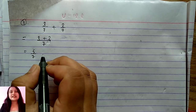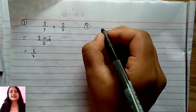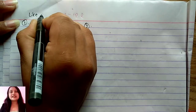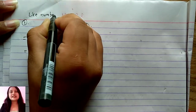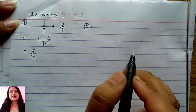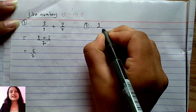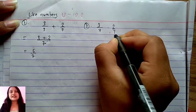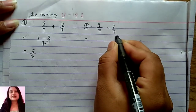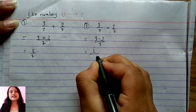Similarly, if subtraction is given, it works the same way when the denominators have like terms. If the like terms are there, we can directly take a common denominator and perform the addition or subtraction. Suppose 3 by 7 minus 2 by 7 is another example. The denominators are the same, so 3 minus 2 upon 7 equals 1 by 7. That will be your answer.